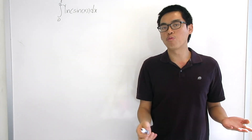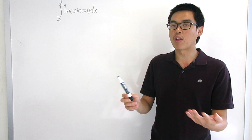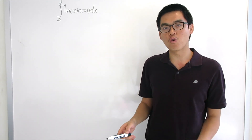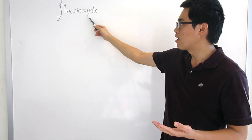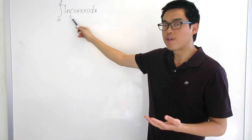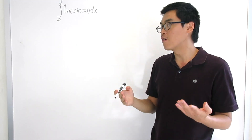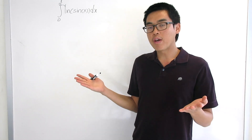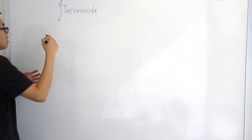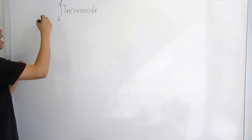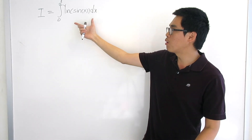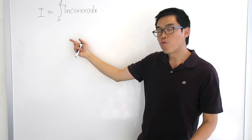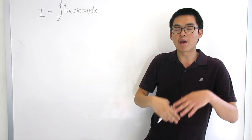So how can we attack this integral? This is one of those functions where you probably cannot find a nice formula for the antiderivative, so you can't just plug in values. Even though you cannot find the antiderivative, you can still find the value of the definite integral. The most common way to do this is to give it a name — let's say this equals I — and then manipulate the integral so a new version will be expressible in terms of I.